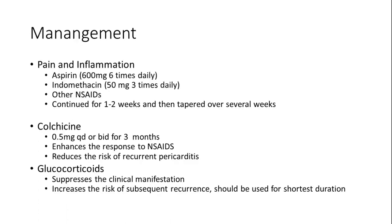For management of acute pericarditis, patients present with chest pain due to underlying inflammation, so we treat both the pain and the inflammation. We typically use aspirin in anti-inflammatory doses — approximately 600 mg six times a day. Other NSAIDs such as indomethacin and ibuprofen can also be used. These NSAIDs should be continued for one to two weeks and then tapered slowly over several weeks.